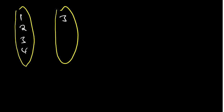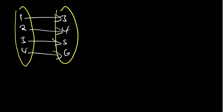Now let's talk about a one-to-one function. Consider a mapping where we have {1, 2, 3, 4} mapping to {3, 4, 5, 6}: 1 goes to 3, 2 goes to 4, 3 goes to 5, and 4 goes to 6. This is a one-to-one function because each input value maps to exactly one output value, and each output value is reached by only one input.